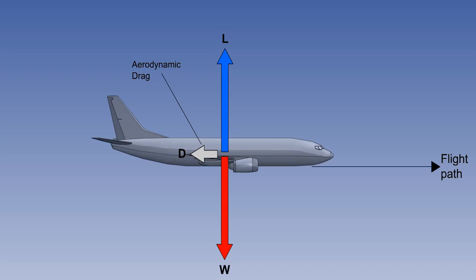Drag acts backwards, parallel to the flight path. And thrust, for the purposes of this lesson, although not strictly true, can be said to act forwards, parallel to the flight path.